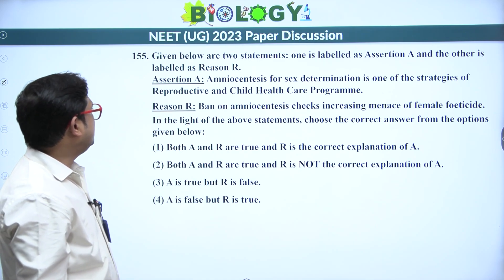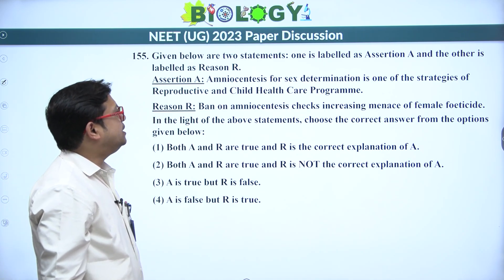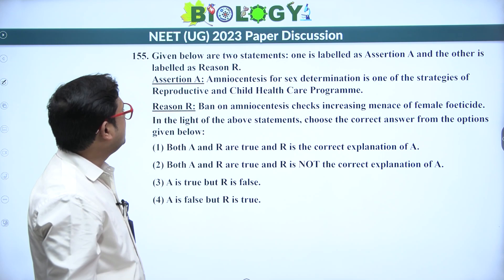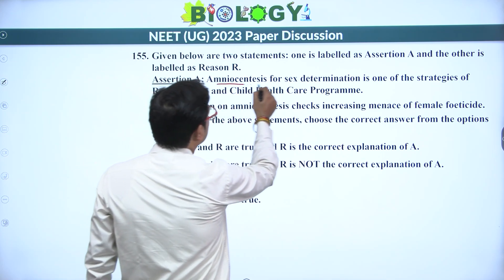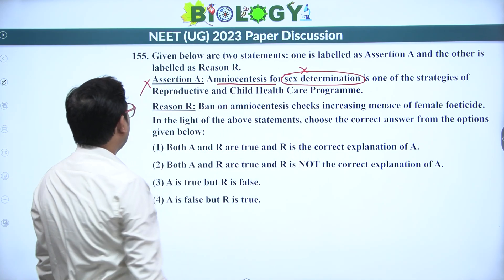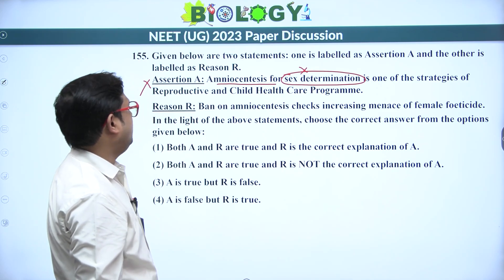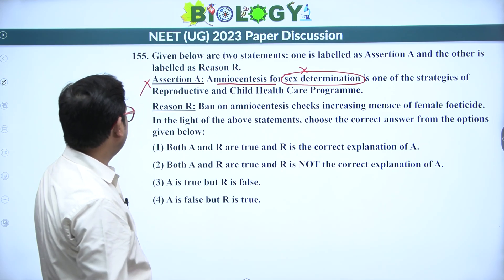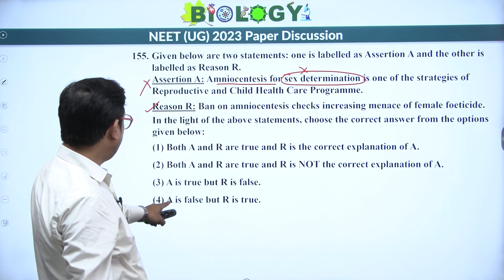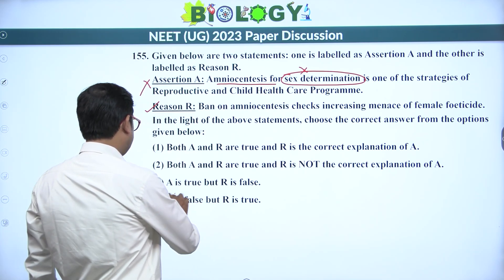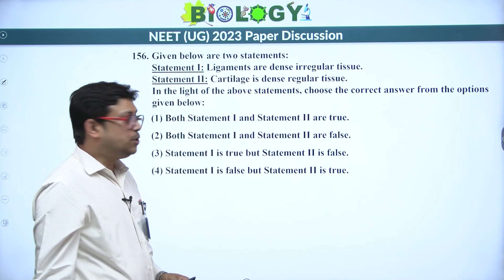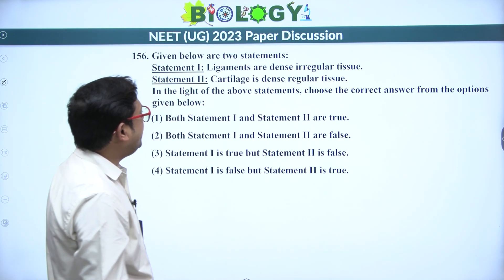Next: assertion — amniocentesis for sex determination is one strategy of the Reproductive and Child Health Care programme. Amniocentesis is not for sex determination; this assertion is wrong. Reason — ban on amniocentesis checks the increasing menace of female feticide — this reason is correct. So assertion is wrong, reason is true — answer is the fourth option.